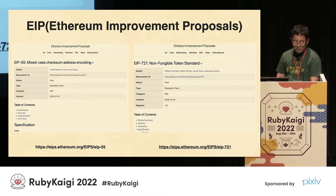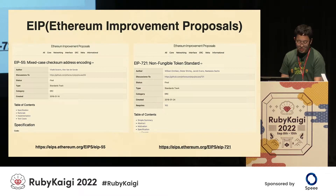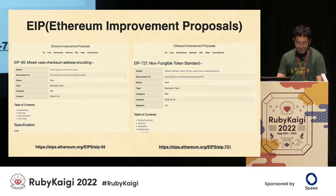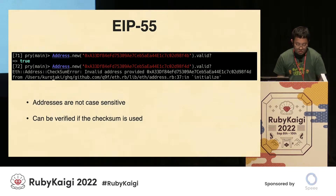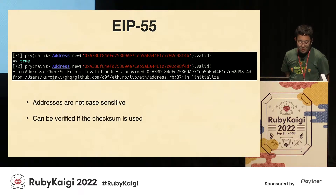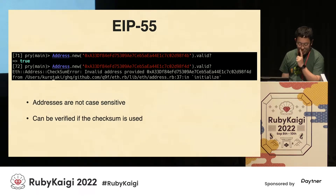Where the specification is being developed — like non-fungible tokens, NFT implementation is described in EIP-721. So Ethereum addresses are case-insensitive, but when they contain uppercase letters, the checksum can be used to check for typing errors.